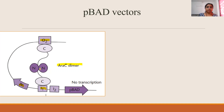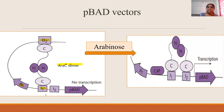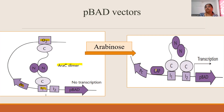When you add arabinose to the medium, arabinose binds to the AraC repressor, allowing AraC to bind to both I1 and I2 — the activator binding sites — and allows transcription from pBAD. At the same time, there is a CAP binding site present, and the cyclic AMP-CRP complex binds there, leading to a high level of transcription.